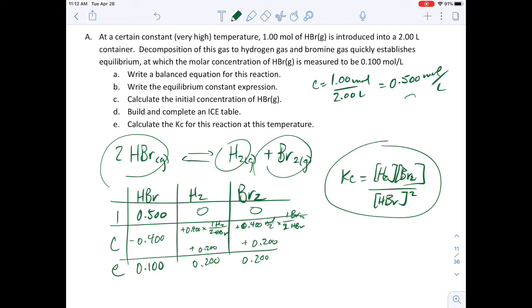Build and complete an ICE table—we've done that—and calculate the Kc. So my Kc is going to be equal to 0.200 mole per liter for my hydrogen, 0.200 mole per liter for bromine, divided by 0.100 mole per liter, and I'm going to square that because that's my hydrogen bromide.